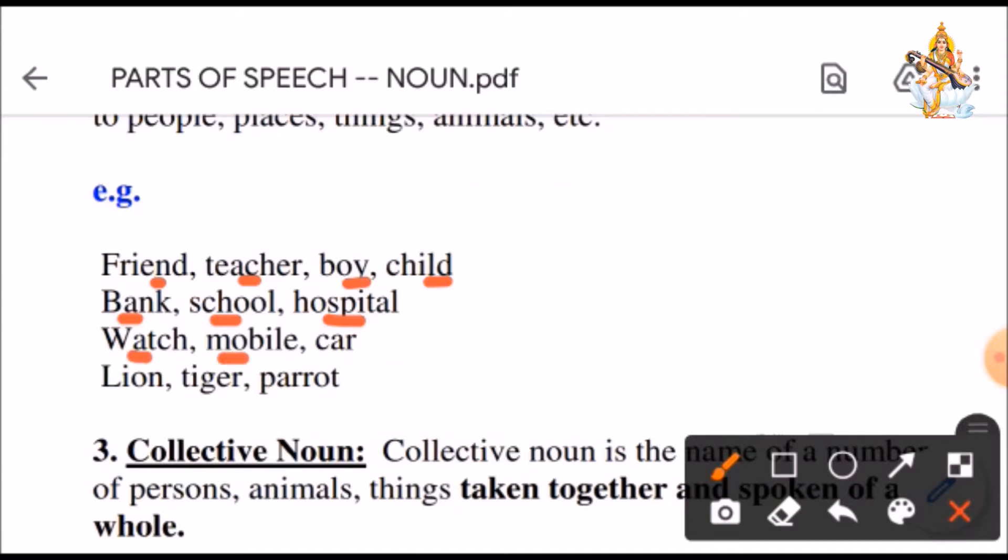Bank, school, hospital, these are the places. We have not given any specific name. We are using them as common noun. Watch, mobile, car, these are common nouns. Lion, tiger, parrot.